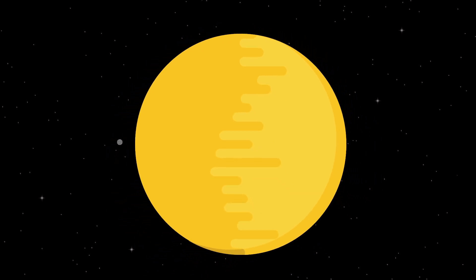During a transit, we see Mercury as a tiny black dot, steadily crossing the face of the Sun over several hours.